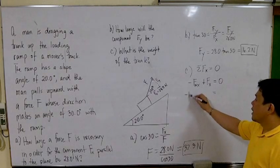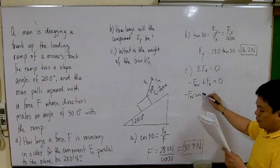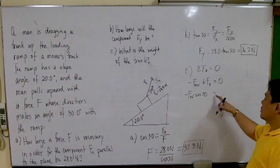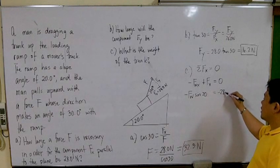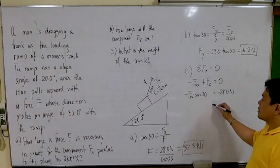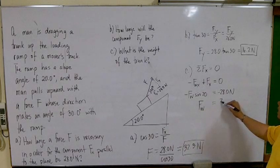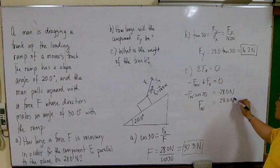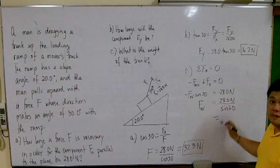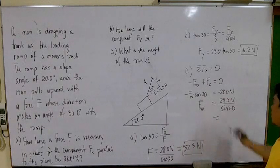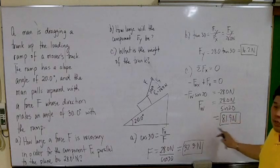F_wx is F_w sine 20. Move this to the other side. Negative F_x is negative 28.0 newtons. Therefore, solving for F_w, you will get 28 newtons divided by sine 20. This will give us 81.9 newtons. This is now the weight of the trunk.